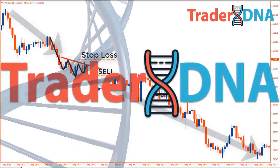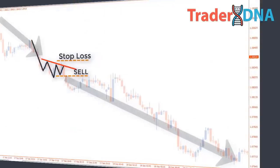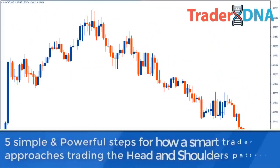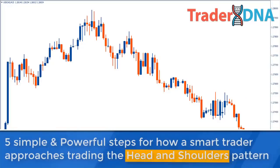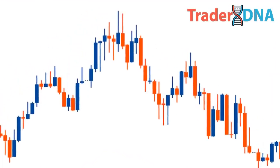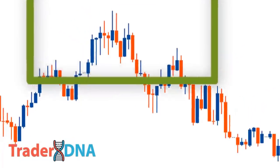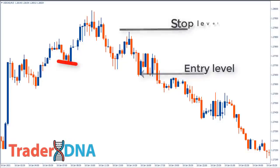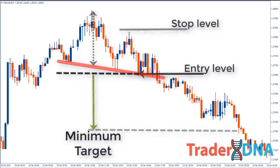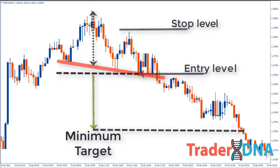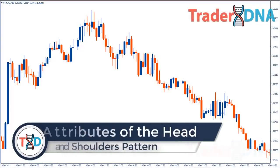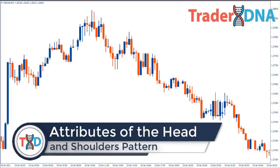Five simple powerful steps for how a smart trader approaches trading the head and shoulders pattern. The head and shoulders chart pattern is a popular and easy to spot pattern in technical analysis that shows a baseline with three peaks, the middle peak being the highest. The pattern appears on all time frames and can therefore be used by all types of traders and investors. Entry levels, stop levels, and price targets make the formation easy to implement. The head and shoulders pattern is believed to be one of the most reliable trend reversal patterns.